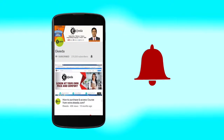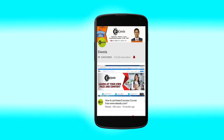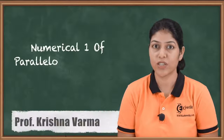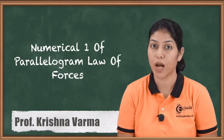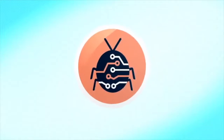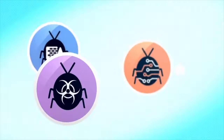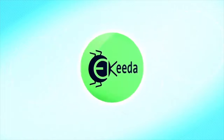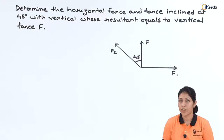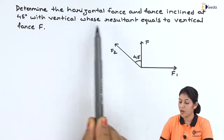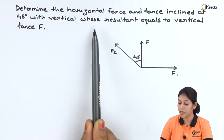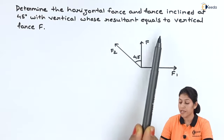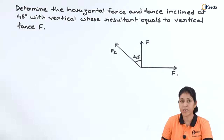Click the bell icon to get the latest videos from Ikeda. Hello friends, in this video I am going to discuss one numerical which is related to concepts of the parallelogram law of forces to find out the resultant of component forces. Here is the numerical: determine the horizontal force and the force inclined at 45 degrees with the vertical whose resultant equals to vertical force F.